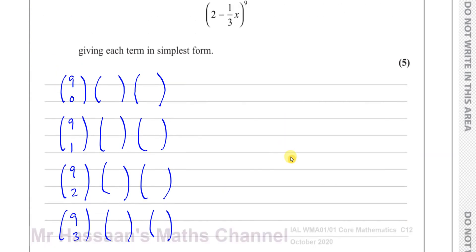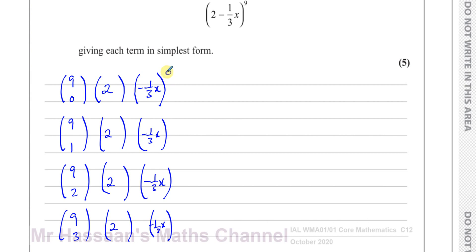We put the values in — the first term is 2 and the second term is minus one-third x. Each bracket gets those two values with the sign. The x term is in the second bracket, so for ascending powers of x it starts from zero, then goes up to one, two, three. The other bracket starts from nine and goes down: eight, seven, six. These numbers always add up to the main power, nine: one plus eight is nine, two plus seven is nine, three plus six is nine.